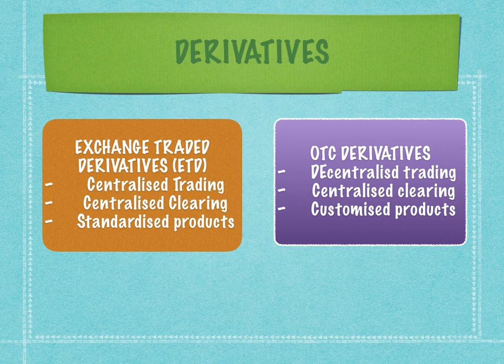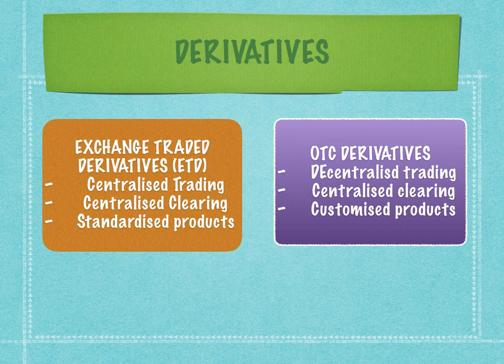So OTC derivatives can have decentralized trading, but today all settlements — whether in the US markets, Japanese markets, Singapore markets, or Indian markets — the clearing that takes place is centralized. We will look at what centralized clearing means when we discuss trade repositories and CCPs in the upcoming slides.